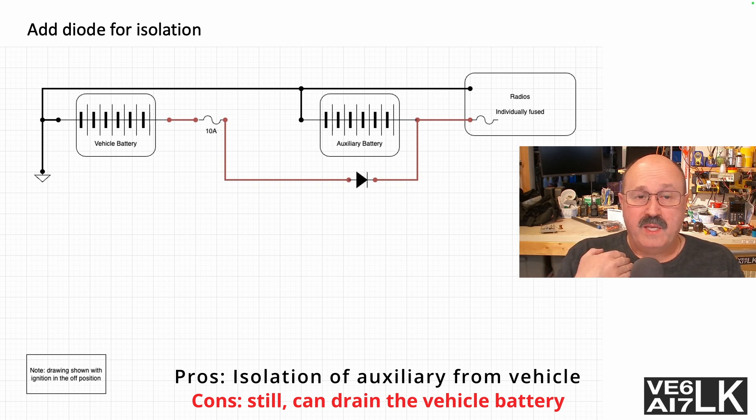But the diode is the simple choice for me because I am going to, in a minute, add some switching. Now the West Mountain Radio rig does all that switching for you, but I can do it with a relay and a diode.